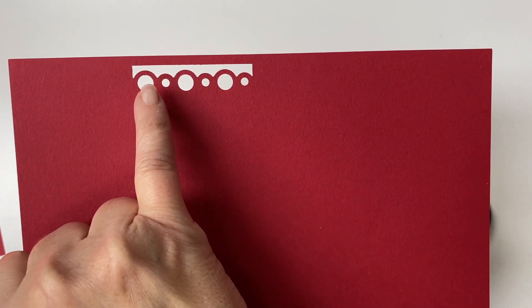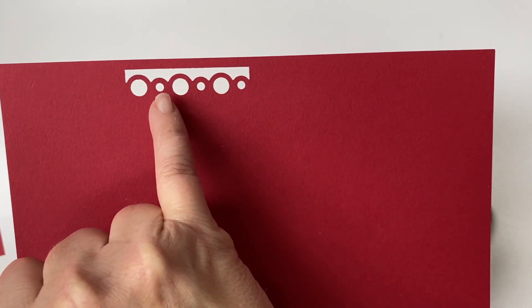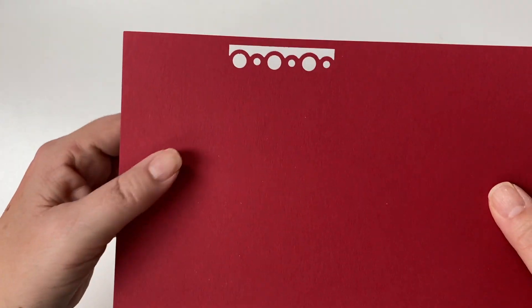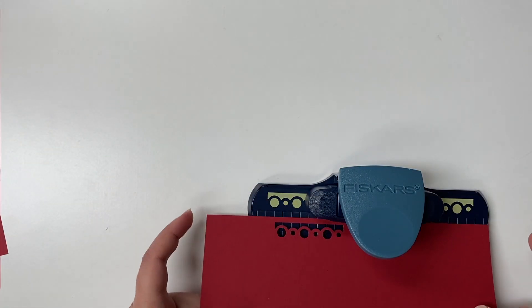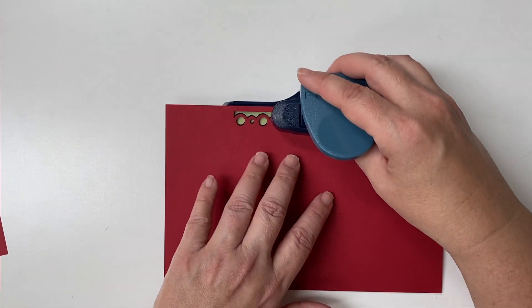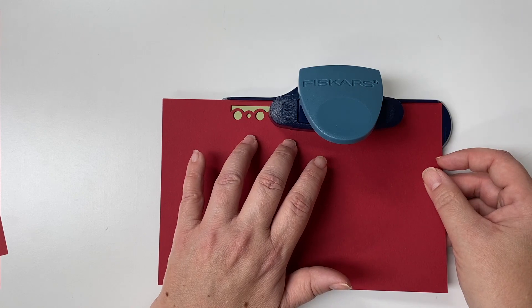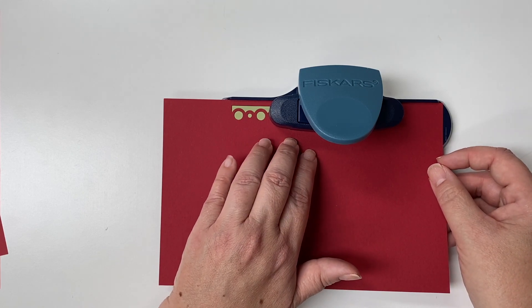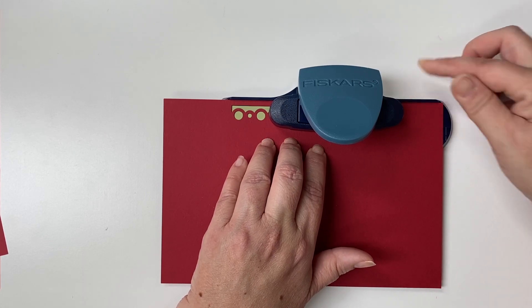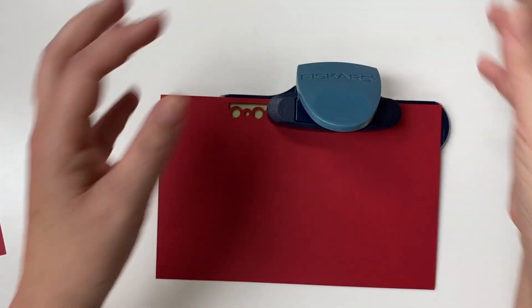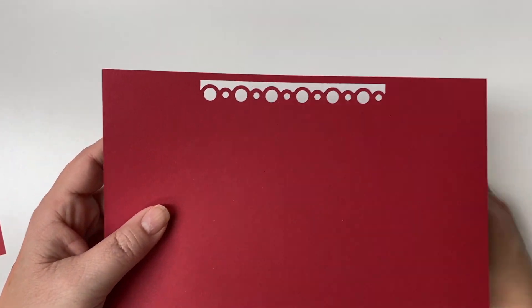So you're going to want to keep that in mind. What you're going to do is you're going to take the leftmost pattern edge and now you're going to put that one on the punch so that it lines up right where you punched already. All right, you keep this side, make sure it's up against the edge, and then you punch it. All right, now we have six in a row.